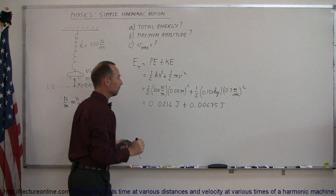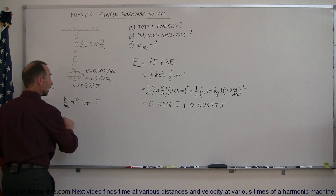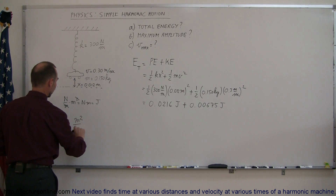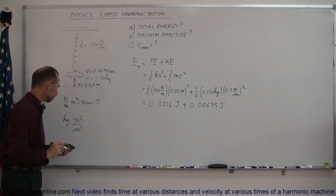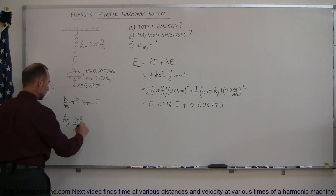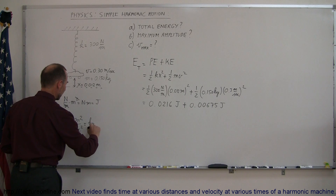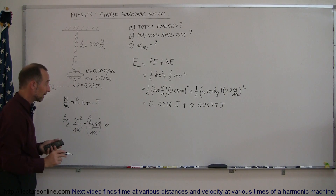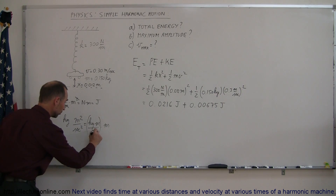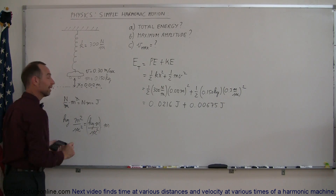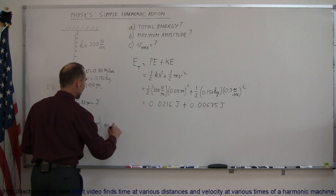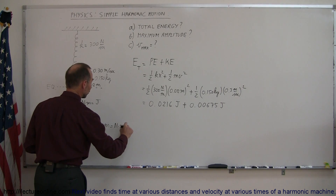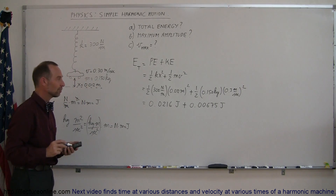For kinetic energy, we have kilograms times meters squared per second squared. Rewriting that as kilograms-meters per second times meters — kilograms-meters per second is by definition newtons — so this gives newtons times meters, which also gives joules. Units check out.